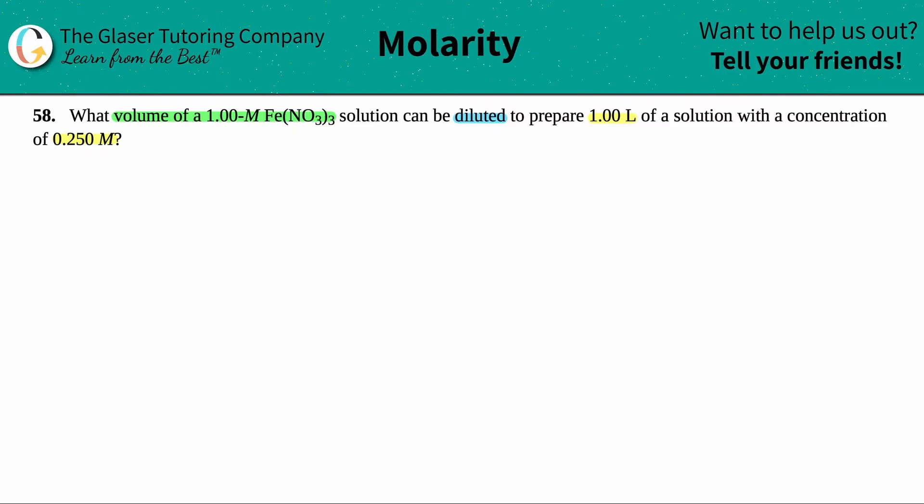Okay, so I see a couple of things here. The first thing that I spot out is that they use the word diluted, so this is basically going to be a dilution problem in which we have one solution, and we have to add a volume to it in order to make or prepare a total of 1.00 liters with our known concentration.